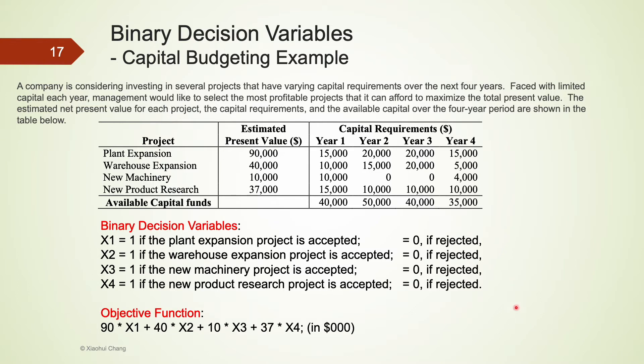With all the decision variables defined, we can state our objective function. The company tries to maximize the total present value. We know that the plant expansion has a present value of $90,000. If we do decide to invest in this project, that means the total present value would increase by $90,000. On the other hand, if we decide not to invest in plant expansion, the total present value would not increase at all. This can also be achieved by multiplying $90,000 with x1, where x1 is either 1 when we decide to invest in this project, or 0 when we decide not to invest in this project.